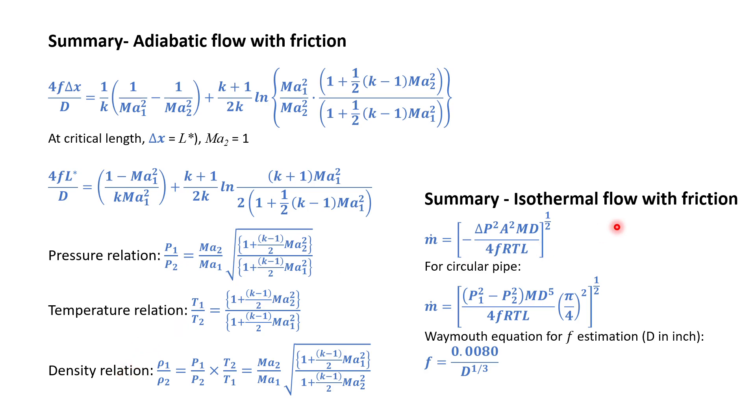And for isothermal flow with friction, we have derived the equation to calculate what will be the mass velocity as a function of pressure difference, the area of the pipe, the pipe diameter, the length, temperature, and friction coefficient.